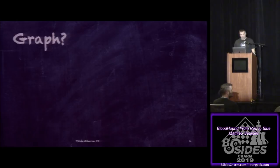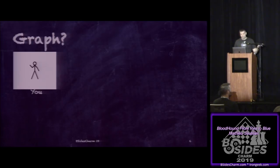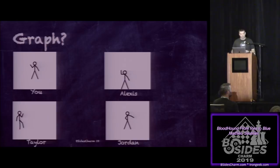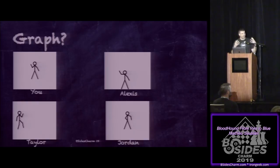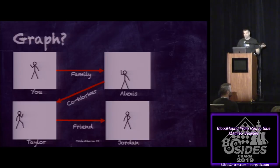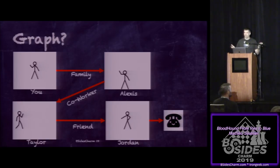When we talk about a graph, it's not only for security — it's for anything. For example, this is you and Alexis in a restaurant. Along come Taylor and Jordan. Now you become infatuated with Jordan, so you're going to leverage different relationships to get what you want. You get your family relationship to Alexis, who is a co-worker of Taylor, who is a friend of Jordan. And with that, you get Jordan's phone number.